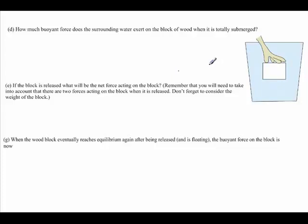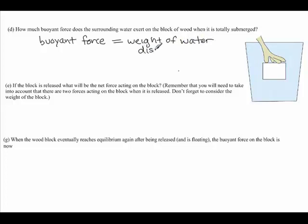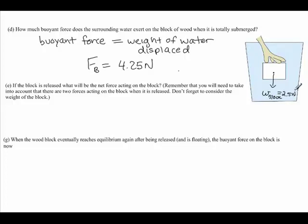The next question asks: how much buoyant force does the surrounding water exert on the block of wood when it is totally submerged? According to Archimedes' principle, the buoyant force is exactly equal to the weight of the water displaced. So the buoyant force equals 4.25 newtons. In the diagram, the weight of the block acts downward at 2.5 newtons, and the buoyant force acts upward at 4.25 newtons.